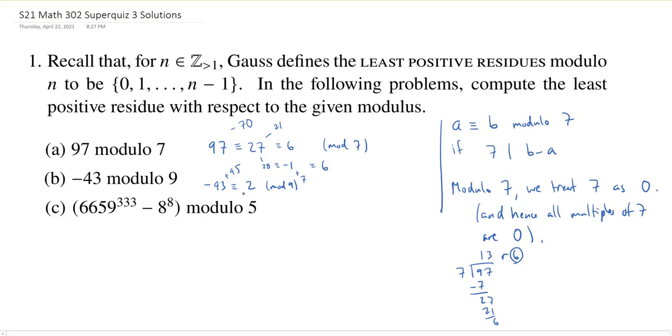Now we get to the last one, and this is the one which is meant to frighten you a little bit, but it's actually not so horrible. So the first thing is if you have a product, some A times B, and why am I thinking about a product here? Well, this is an exponent, and exponent is just a repeated product. Here I'd have like 6659 times itself 333 times. So Gauss proved that if big A is congruent to little a and big B is congruent to little b, then AB is congruent to little a times little b.